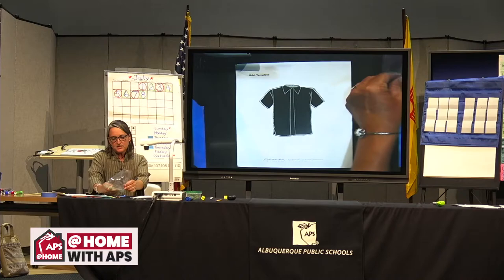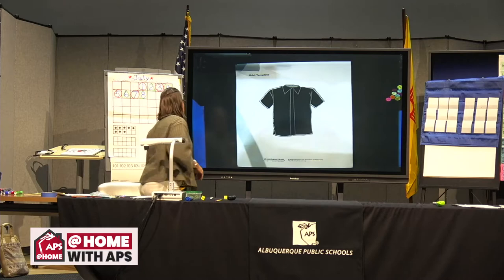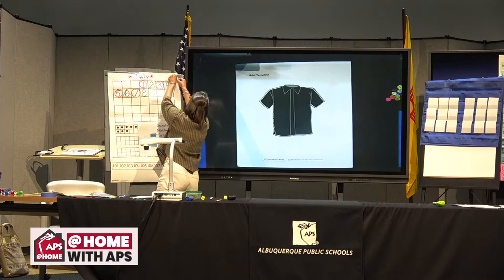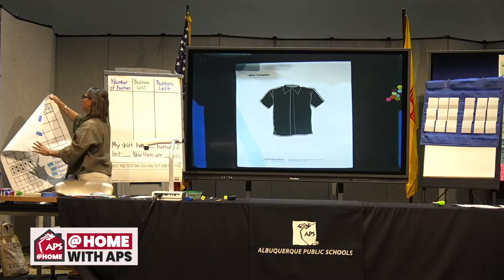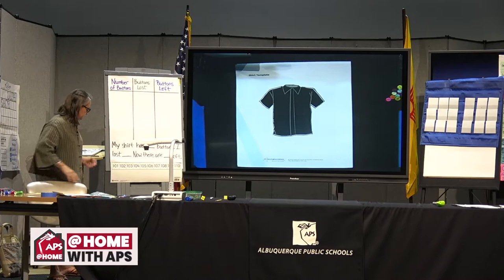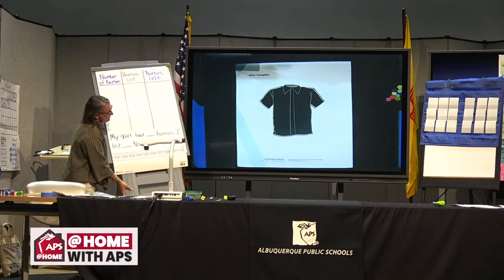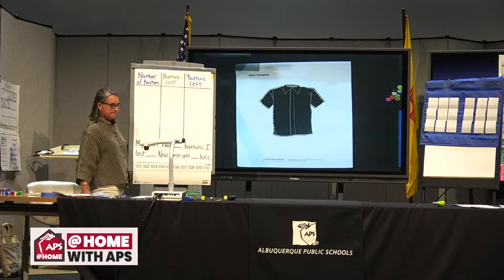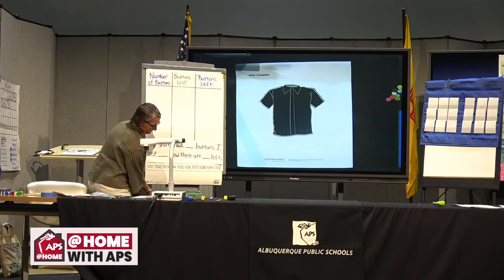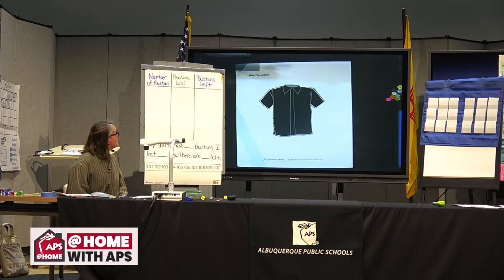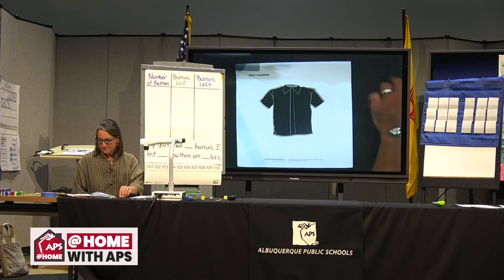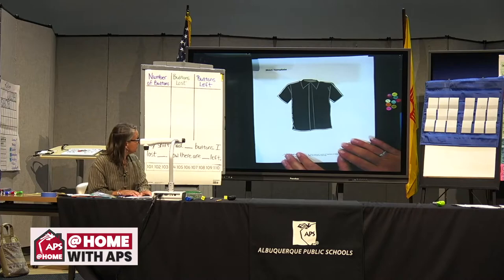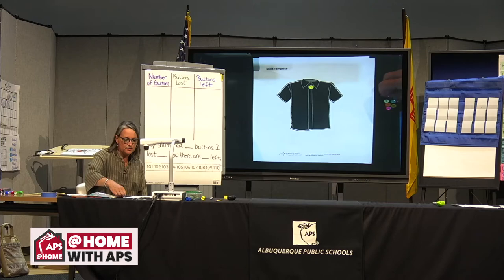We're going to do a little charting. We have our chart and we're going to be thinking about lost buttons today. We're going to take our picture of our shirt and put some buttons on it. Let's put six buttons on our shirt — help me count: one, two, three, four, five, six. We have six buttons on our shirt. What if I lost two buttons from my shirt? I had six but I lose two — wonder how many would be left?